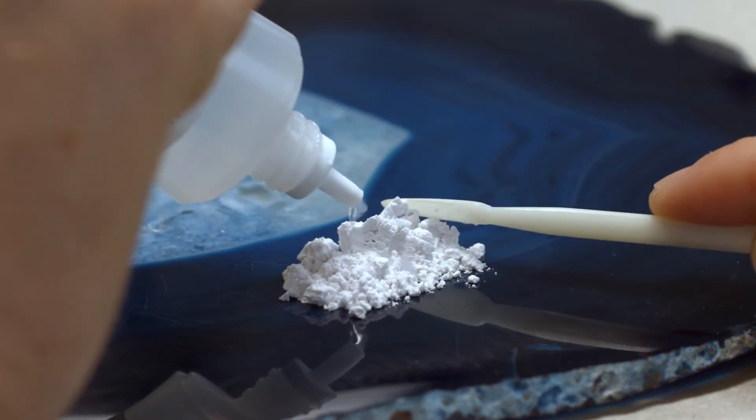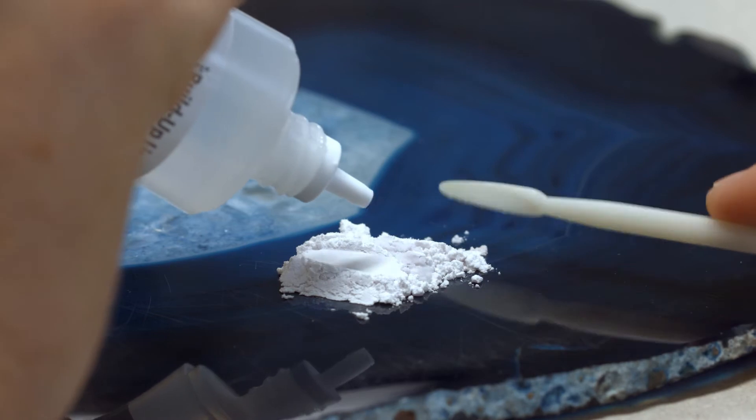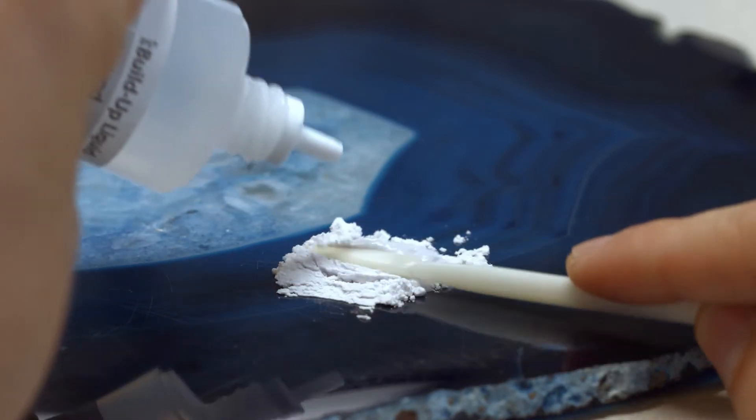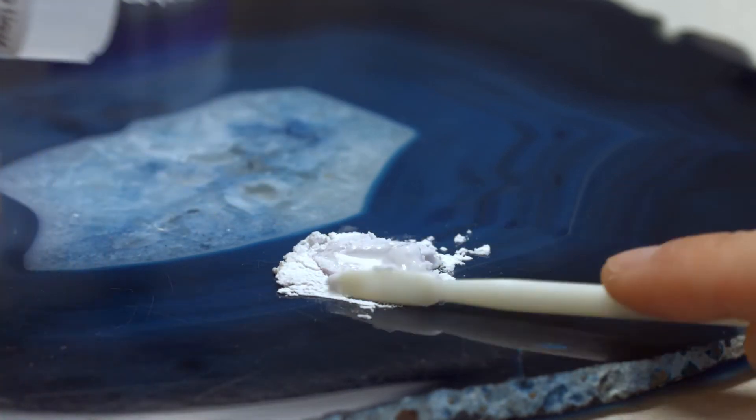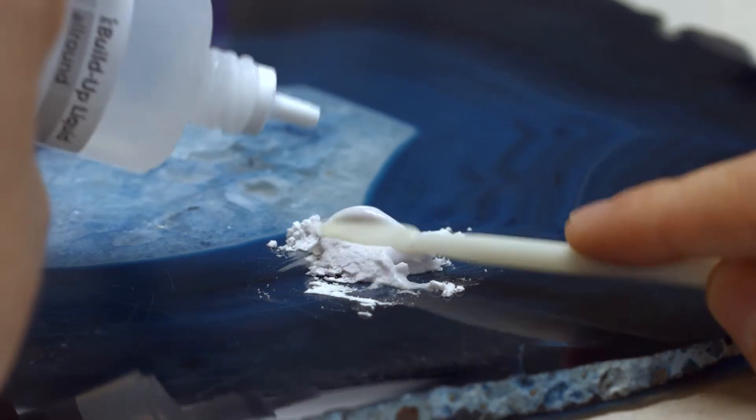Mix the ceramic powder with IPS Build-Up Liquid. Adjust the desired stiffness of the ceramic materials with IPS Build-Up Liquid All-Round or IPS Build-Up Liquid Soft.